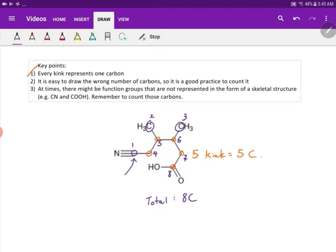Just a couple more points. The first point is that it is easy to draw the wrong number of carbons - it's a very common mistake. So it's a good practice to count it at the end every time you draw a skeletal structure.